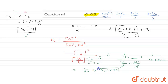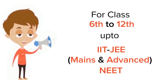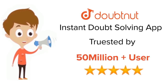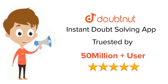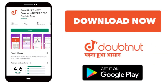The value of Kc is 0.05. So the correct option for this question is option 4. Thank you. For Class 6 to 12 IIT JEE and NEET level, trusted by more than 5 crore students — download DoubtNet today.